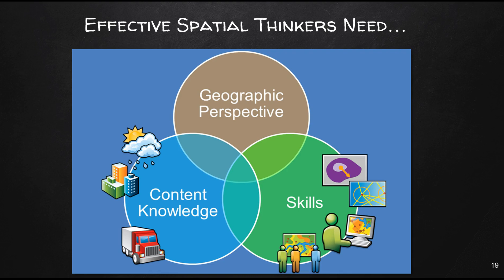Content knowledge is critical — for example, working with climate data effectively means understanding climate systems including the Intertropical Convergence Zone, local convection, mountain ranges, ocean currents, air pressure, and water vapor. The same applies to watersheds, ecosystems, energy production, population dynamics, natural hazards, transportation networks, and social fabrics. Finally, the geographic perspective — asking thoughtful questions and seeing the world as interconnected systems from local to global — ties into geographic inquiry: asking questions, gathering data, analyzing, assessing, and making decisions, which then leads to further inquiry.